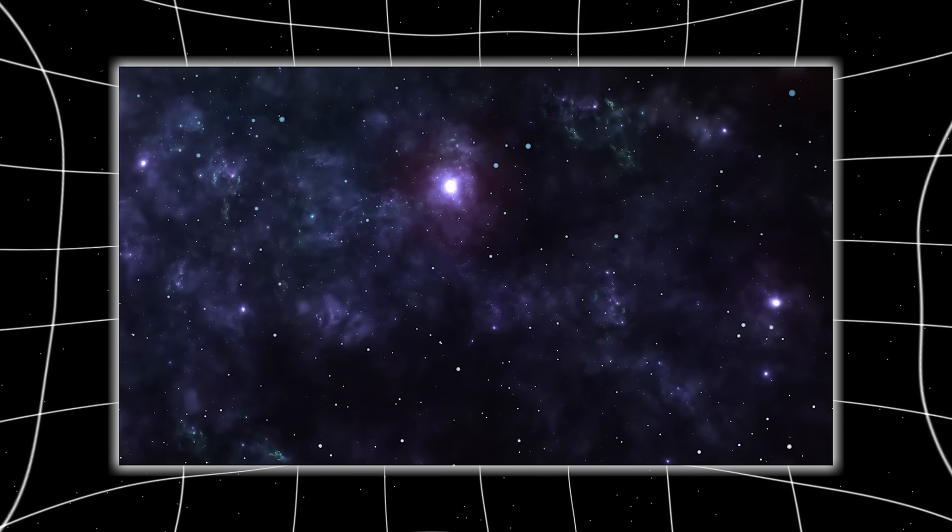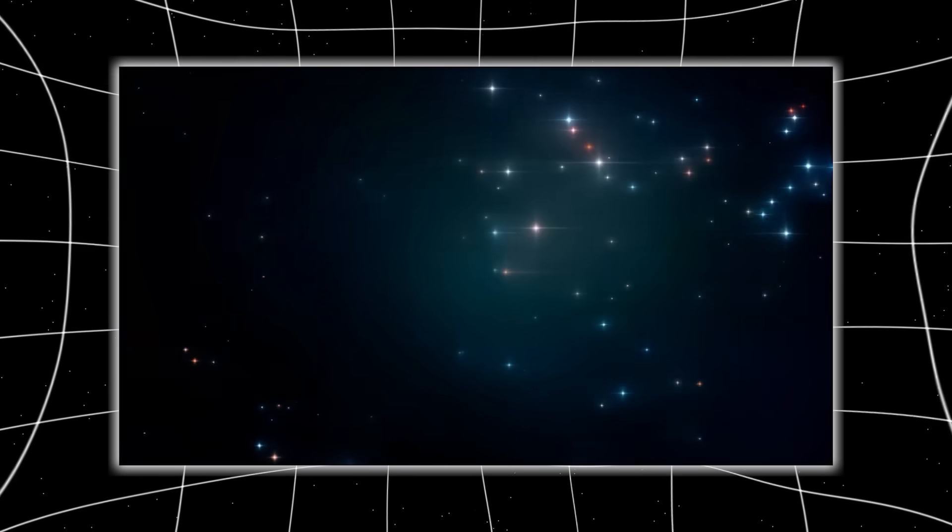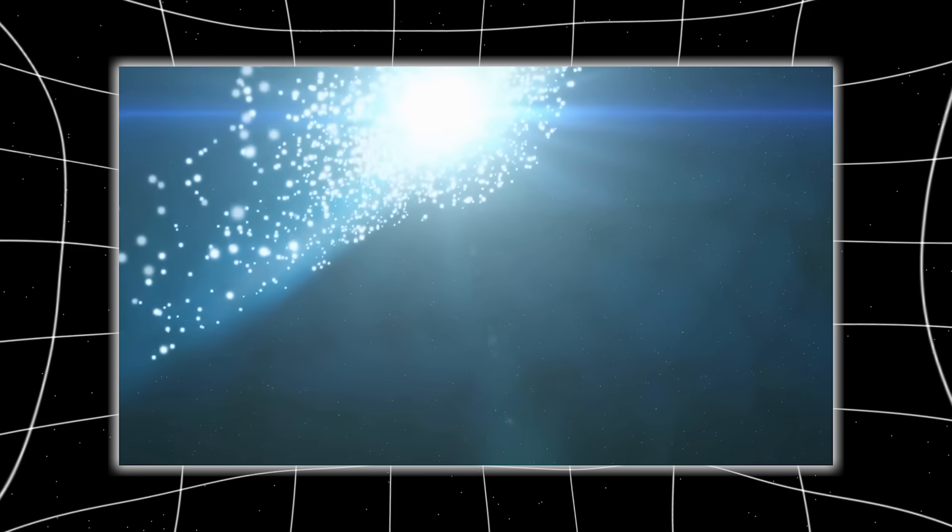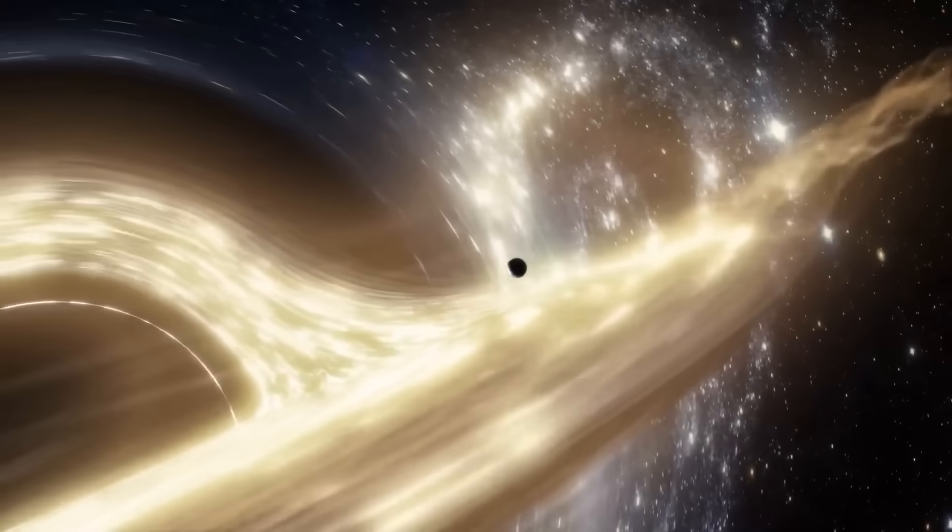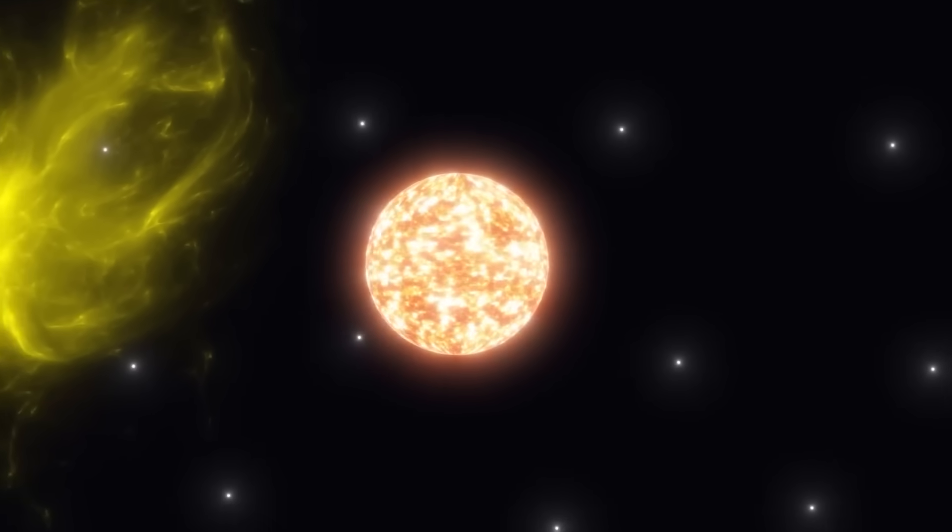There, hidden in a void that should have been empty, Webb's instruments caught a glow, faint, symmetrical, and alive with impossible geometry. What the telescope captured next made astronomers question everything they knew about physics, time, and the shape of our universe.